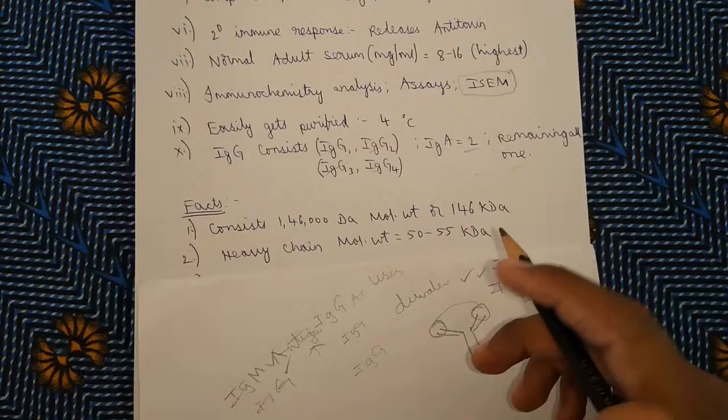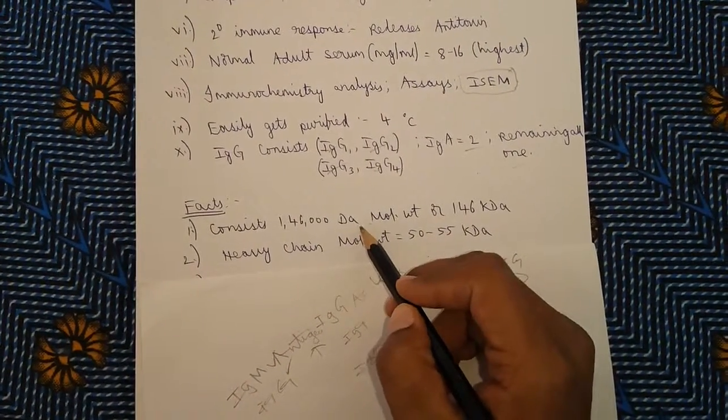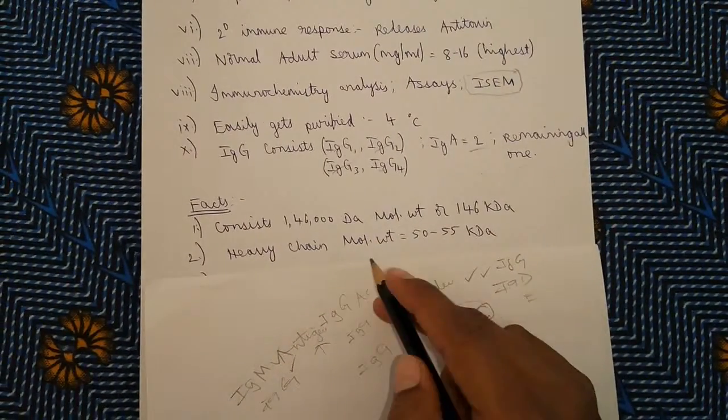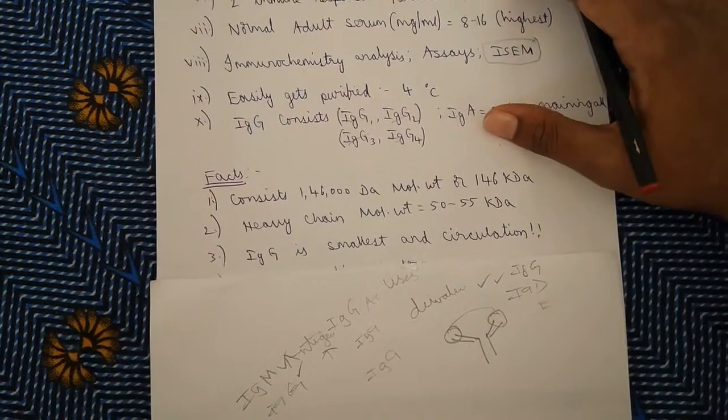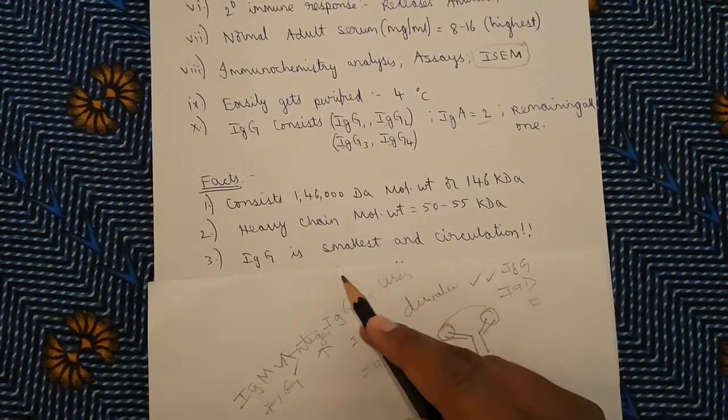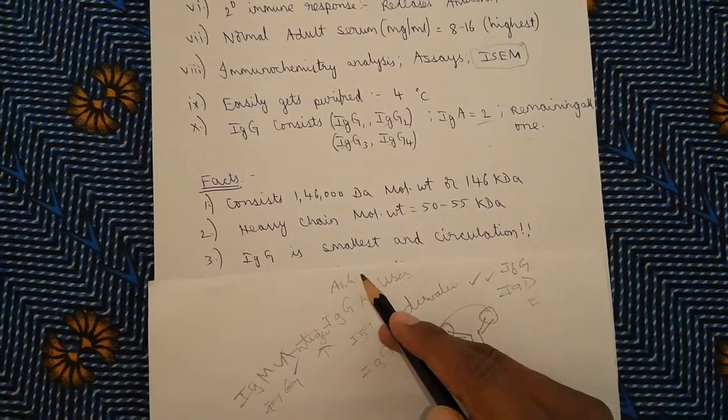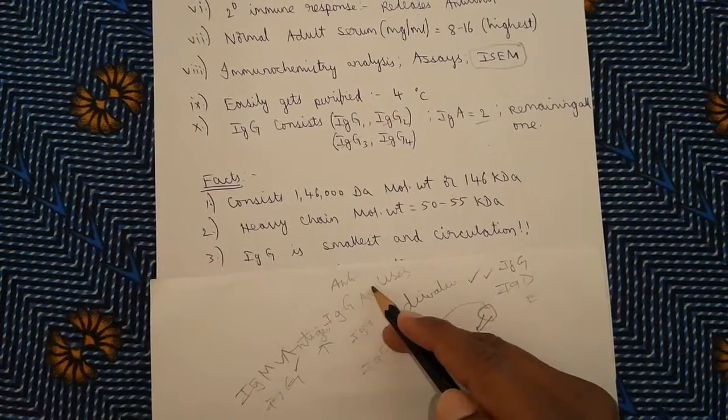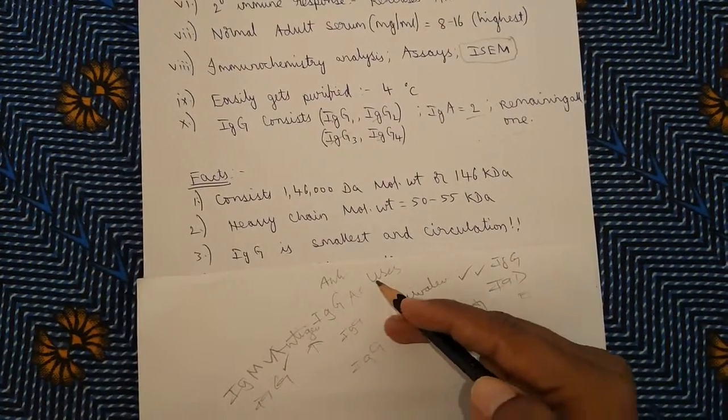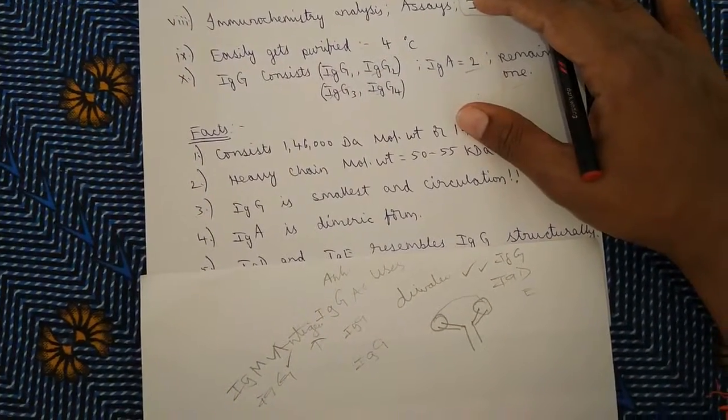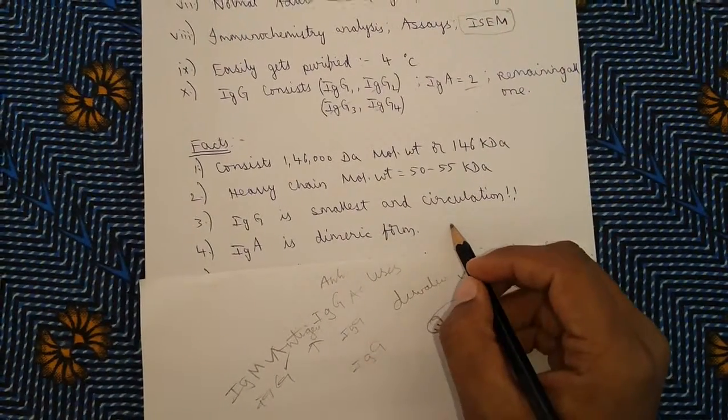Now let us discuss the facts. The first fact of immunoglobulin G: its molecular weight is 146,000 daltons. Its heavy chain molecular weight is 50 to 55 kilodaltons, which is much higher. IgG is the smallest antibody in circulation. It gets circulated throughout the body and reaches the nook and corners of the tissues and removes or kills the bacteria and viruses. IgA is dimeric in form—it means two IgG molecules combined to form one IgA molecule.